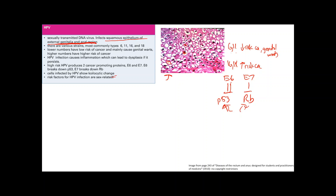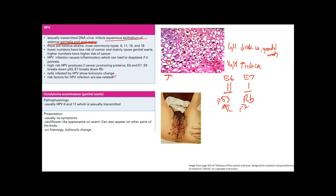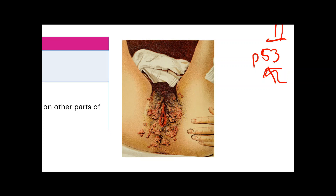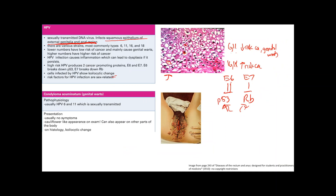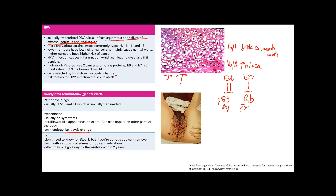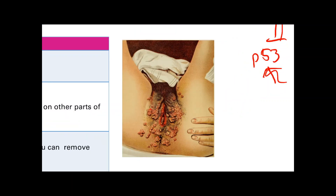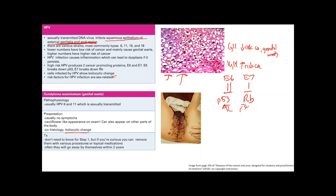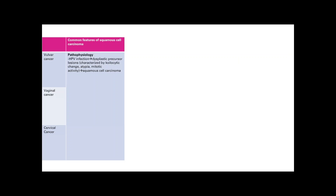In the vulva, HPV can cause condyloma acuminatum — genital warts — caused by low-risk types 6 and 11. Usually asymptomatic, they appear as cauliflower-like growths on the vulva or other areas. On histology, you see koilocytic change. Treatment options include topical medications to destroy wart cells, cryotherapy, surgical removal, or watchful waiting — they typically resolve within two years.